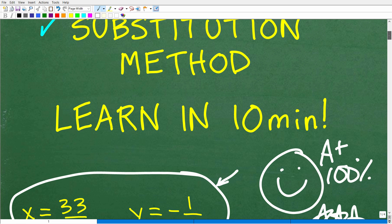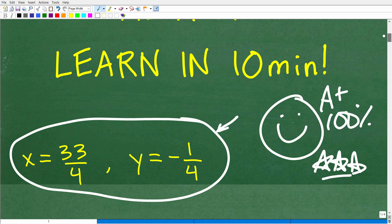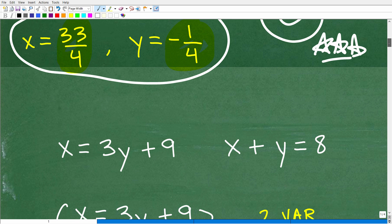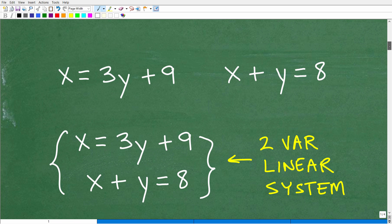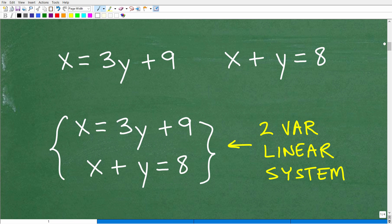But anyways, all jokes aside, you should be pretty proud of yourself if, in fact, you were able to solve this. Because you can see here that our answers have some fractions in them. You know, it's not such an easy system to solve. But let's go ahead and get into it. I'm going to try to explain this substitution method in about 10 minutes. But before we do, let's just do a quick, quick, fast review about two variable linear systems in general.